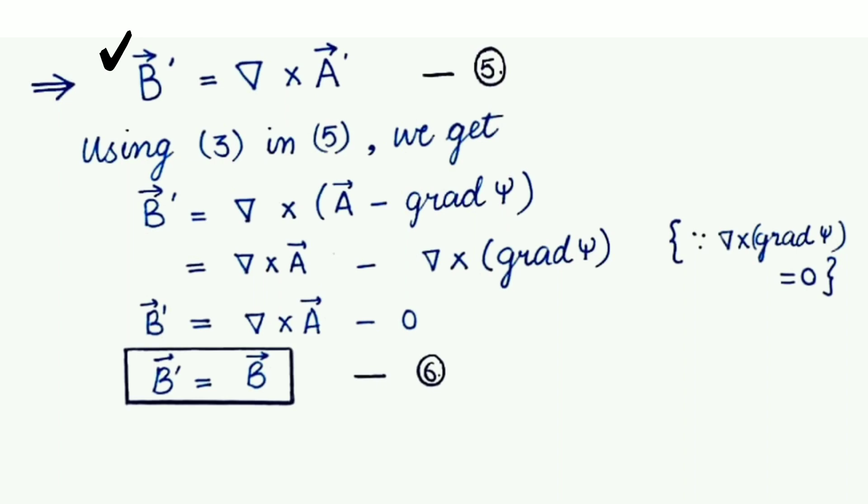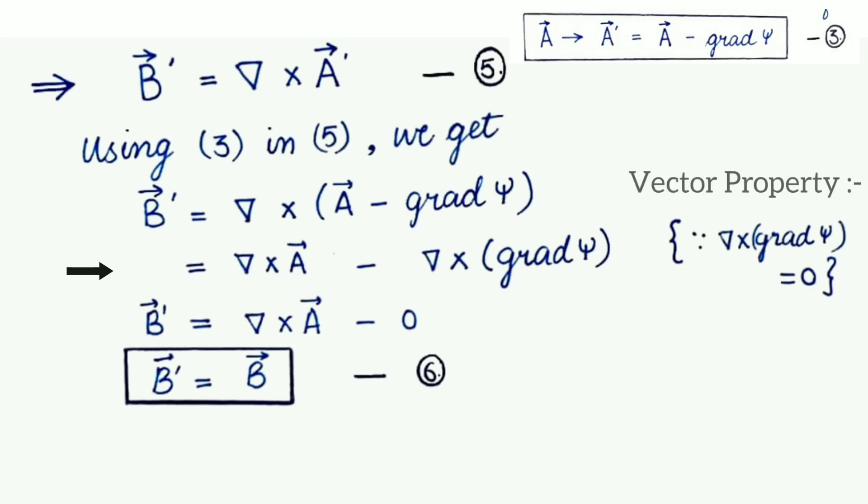Now, let's consider another magnetic field that is B dash and it can be expressed as del cross A dash, right? And now, we are going to use this transformation here at the place of A dash. So, we can write it as B dash is equals to, here we place the value of A dash, that is A minus grad psi. Now, simply using the distributive property, we will solve it, that is del cross A minus del cross gradient of psi. And from the vector quantity, we know that this term is equals to zero,